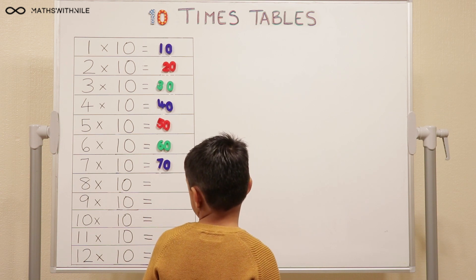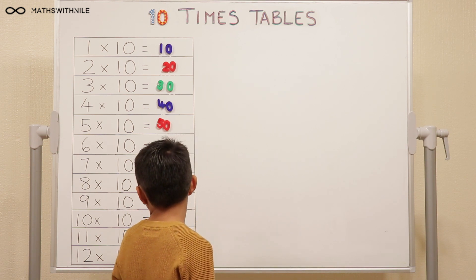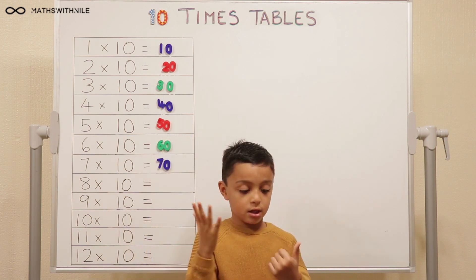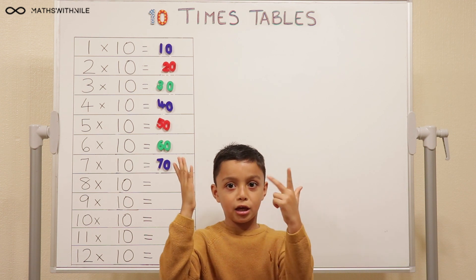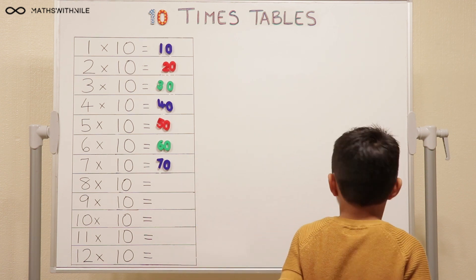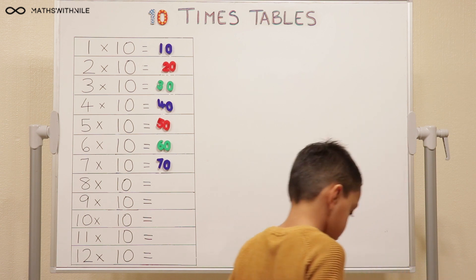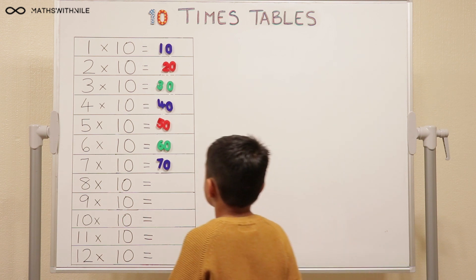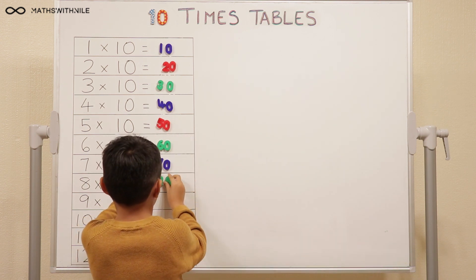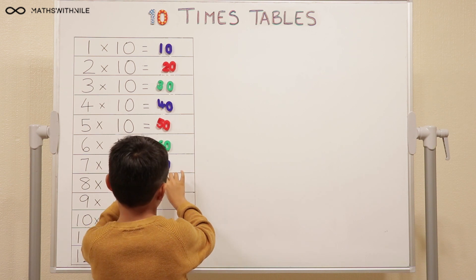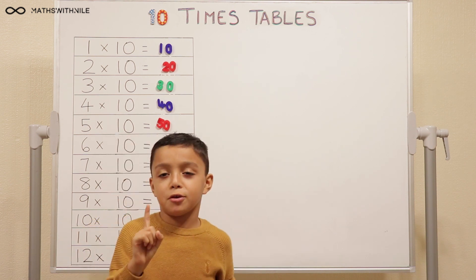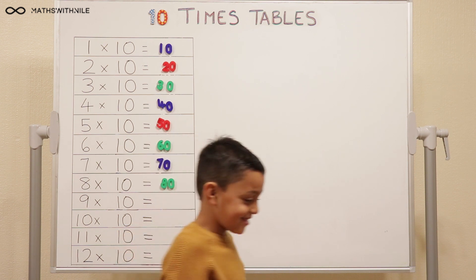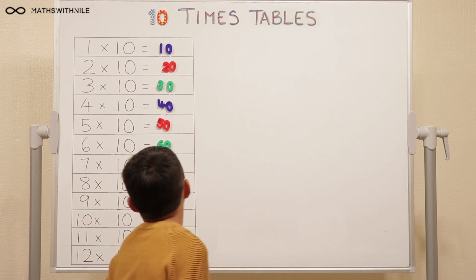8 times 10, so 10, 20, 30, 40, 50, 60, 70, 80. So 80, and make sure if you're writing it down, don't put your 80 the wrong way around. Did you just do that? Did you put the 0 before? Okay, so 8, 0 equals 80. Next question.